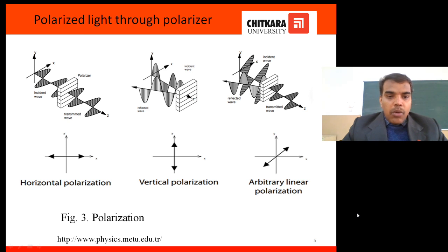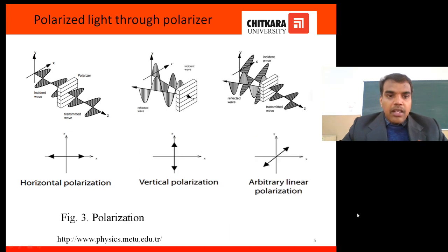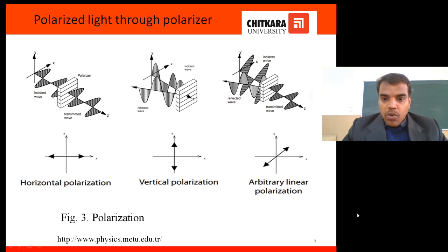Here we have an example with a horizontal polarizer. A light particle can take four different directions at the same time. With a horizontal polarizer, horizontal light passes through, while vertical light is filtered and reflected. When a photon arrives at 45 degrees, it may be reflected or passed — this is called the uncertainty principle. Uncertainty and probability are the main elements of machine learning and deep learning algorithms.